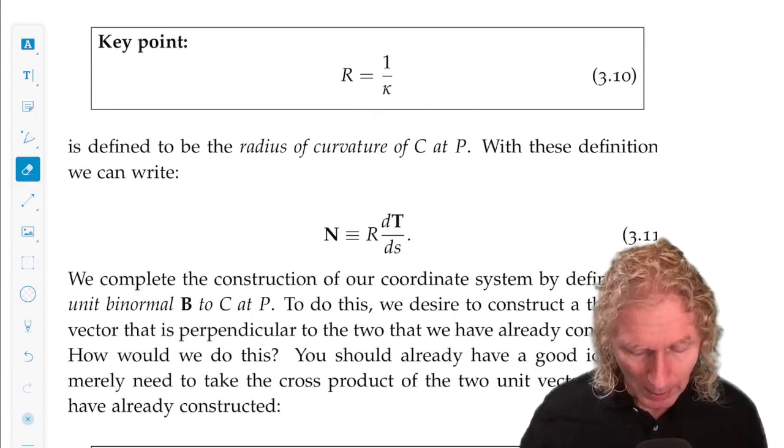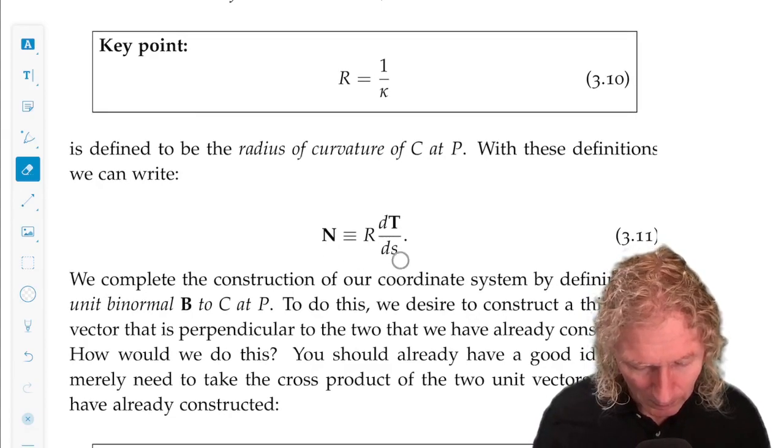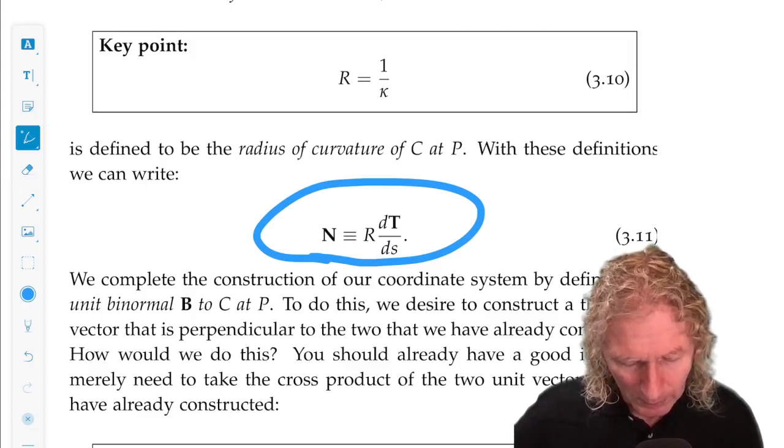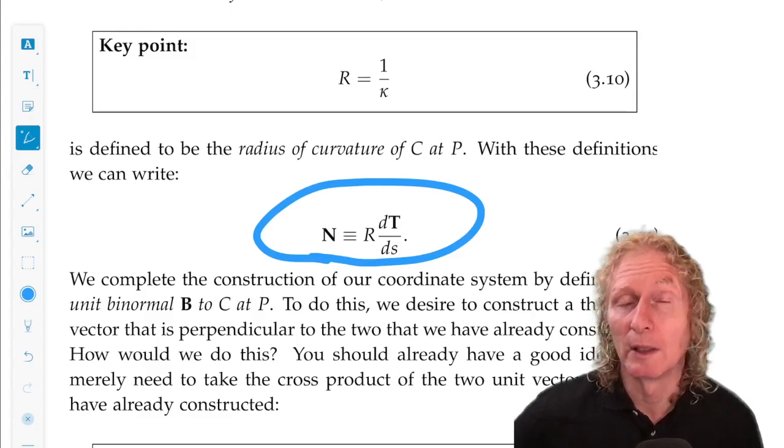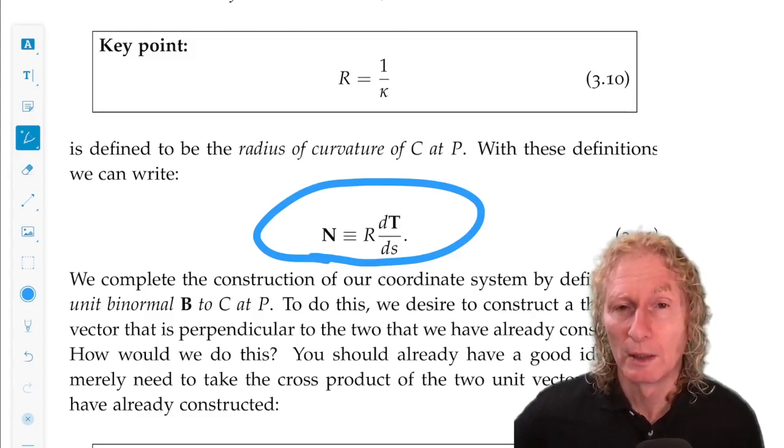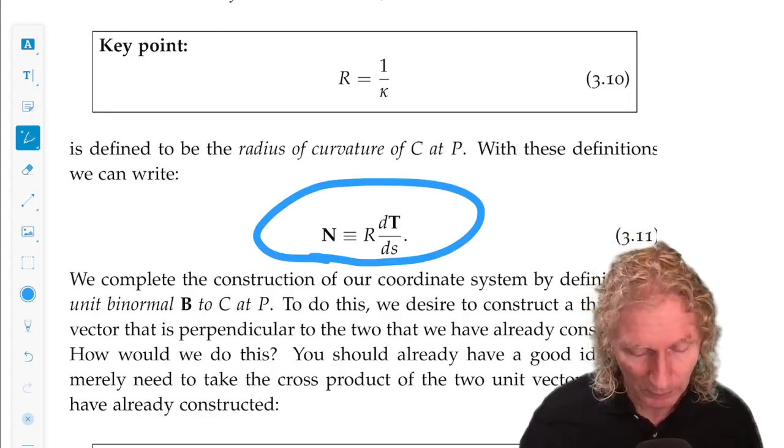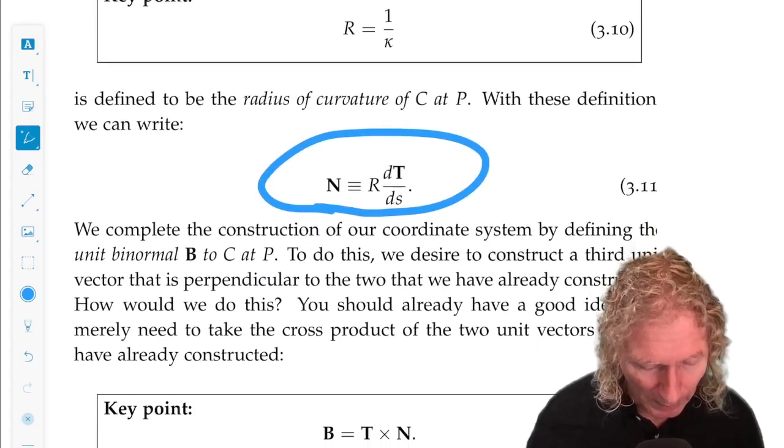So with these definitions, N has form r, radius of curvature times dT/ds, because remember, N was dT/ds divided by the magnitude of dT/ds. That's our definition of radius of curvature, 1 over that quantity.